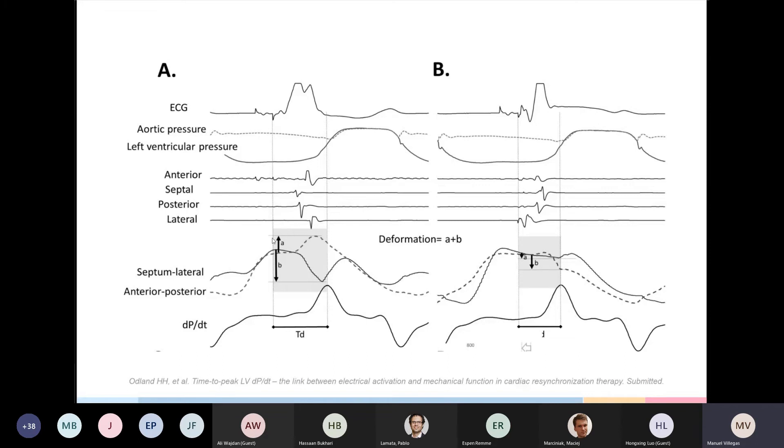Also, there's quite a lot of deformation in the LV due to the impaired contraction, as you can see here from the septum lateral segment and anterior posterior. On the other hand, the right panel shows the same animal with biventricular pacing, and now the activation sequence is early in the lateral wall because we're pacing from exactly that point. But we have very little deformation, meaning that the rise of pressure is faster, and this translates to a smaller value of TD, as we can see here.